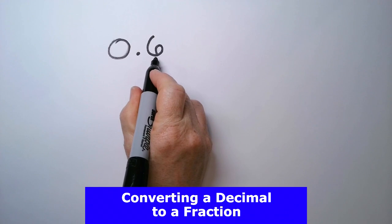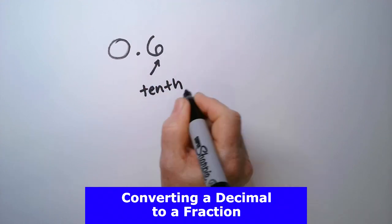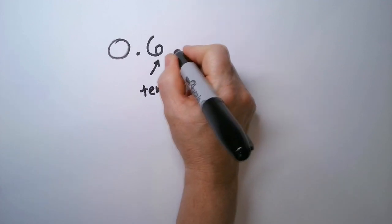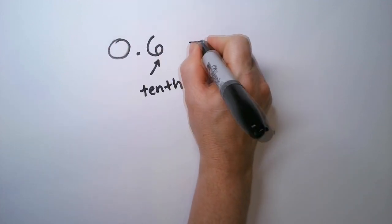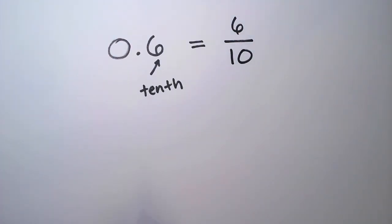This is 6 tenths. This position is the tenths position, and that tells you what goes in the denominator. 6 tenths is the decimal form of this number, which can also be represented by a fraction: 6 tenths.